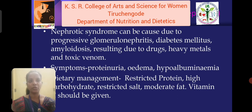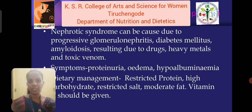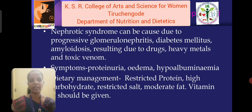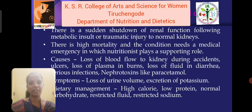Nephrotic syndrome can be caused due to progressive glomerulonephritis, diabetes mellitus, amyloidosis resulting from drugs, heavy metals, and toxic venom. Symptoms like proteinuria, edema, and hypoalbuminemia are observed. Dietary management: restricted protein, high carbohydrate, restricted salt, and moderate fat is recommended.